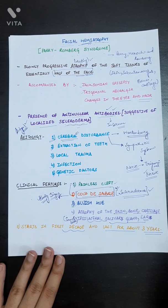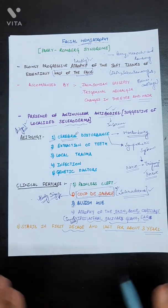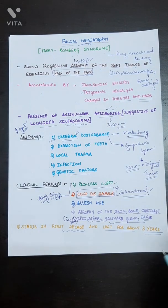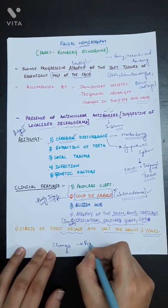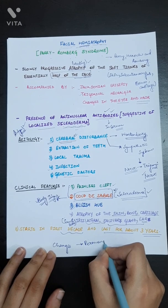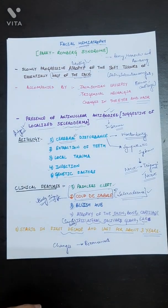It starts in the first decade and lasts for about three years. This is basically self-limiting. After three years it will stop, but the changes that occurred will be permanent.